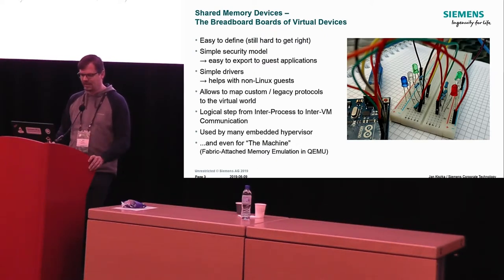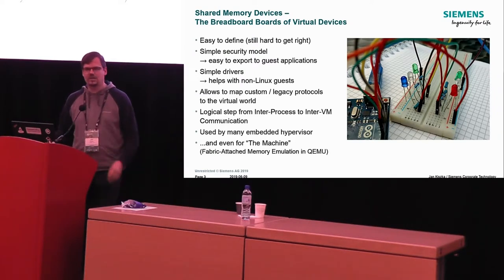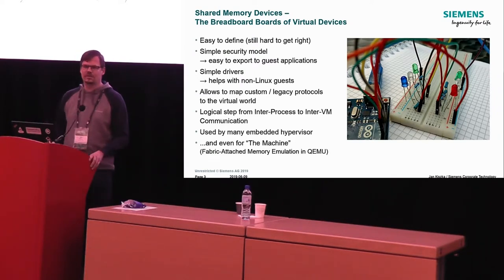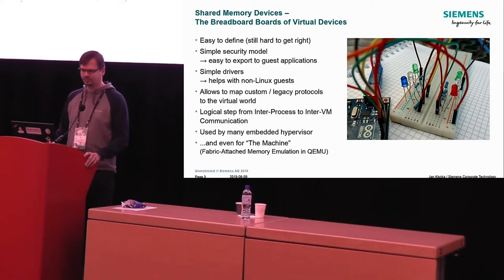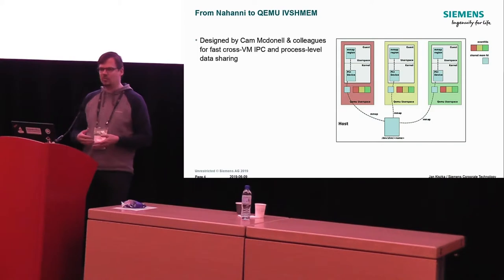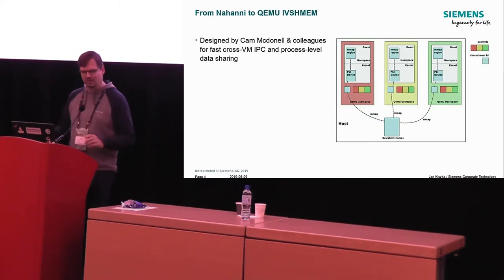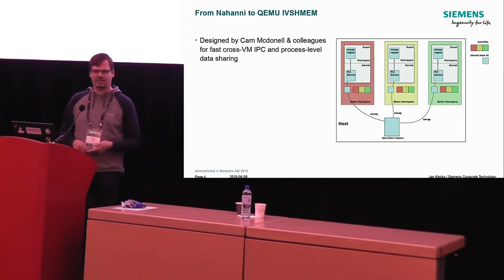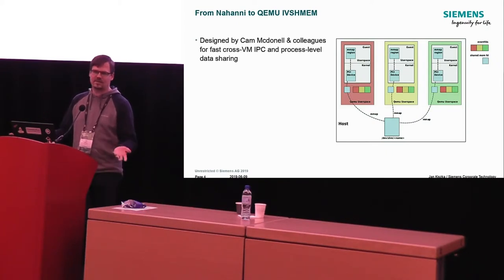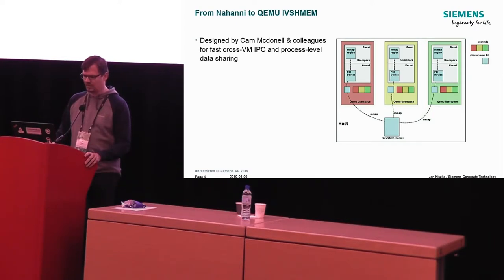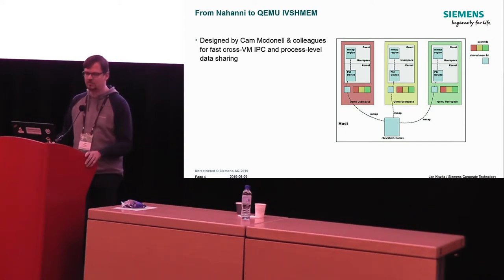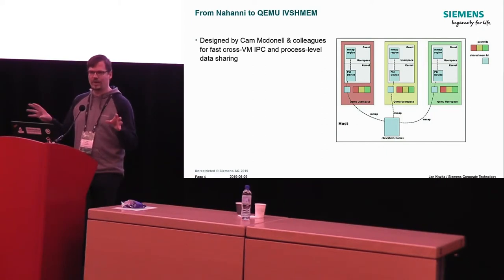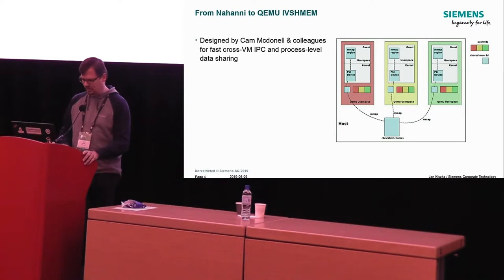Because it's so simple, it's actually being done multiple times in different ways, also by embedded hypervisors but not only for the embedded world - it's also used for larger things. For example, the HP Machine has an emulation model in QEMU and it also uses ivshmem to model their fabric-attached memory between machine nodes. How QEMU got this ivshmem model originally was driven by a very basic need to interconnect guest applications for high performance reasons - originally done by Cam Macdonell and his colleagues to have a cross-VM IPC mechanism which is very simple and, if used efficiently, one of the fastest imaginable communication paths.